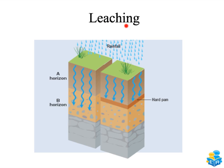To summarise: soil leaching is when heavy rainfall washes all the nutrients from the A horizon down to the B horizon. If this heavy rainfall continues, a hard pan can develop — this is severe leaching and it's really bad for soil.